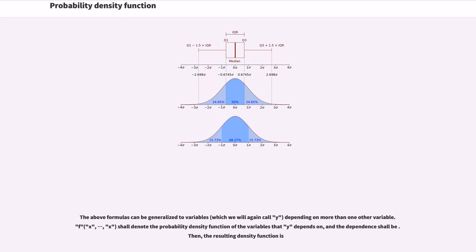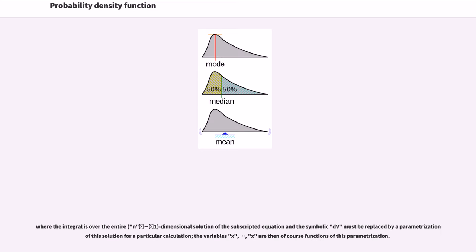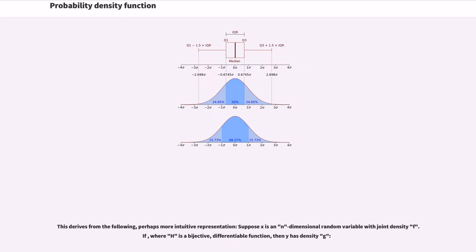The above formulas can be generalized to variables depending on more than one other variable. Let f denote the probability density function of the variables that Y depends on, with the dependence given by Y = g(X₁, X₂, …). Then the resulting density function is given by an integral over the entire solution surface of the equation, where the symbolic dV must be replaced by a parametrization of this solution for a particular calculation, and the variables X₁, X₂, … are functions of this parametrization.